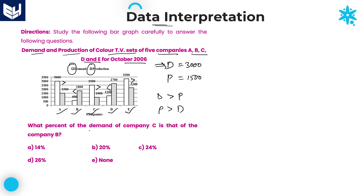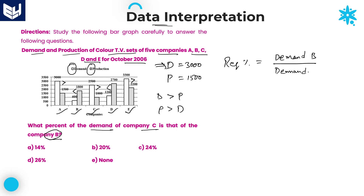Question 1: What percent of the demand of company C is that of company B? We are talking about demand, so we need to calculate the percentage. The required percentage equals demand of company B divided by demand of company C, multiplied by 100. Demand of company B, from the white bar, is 600.